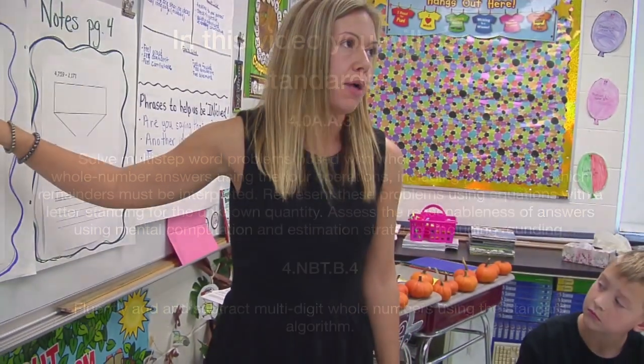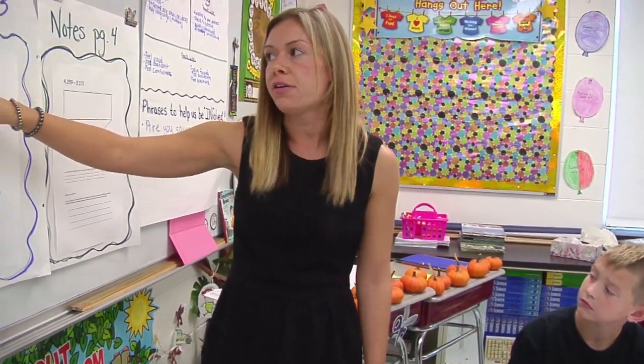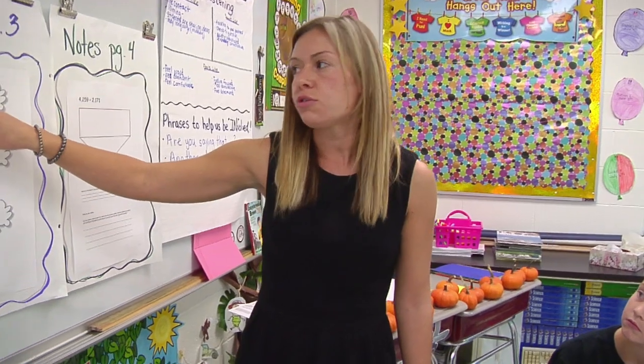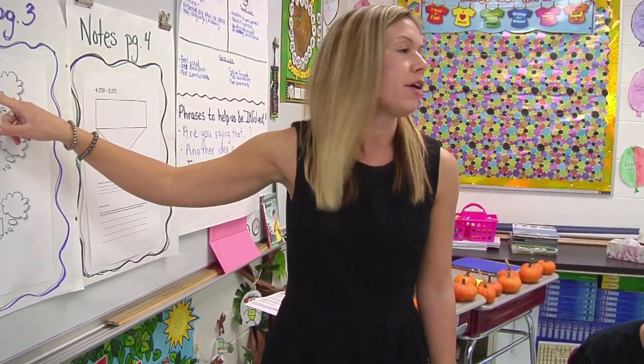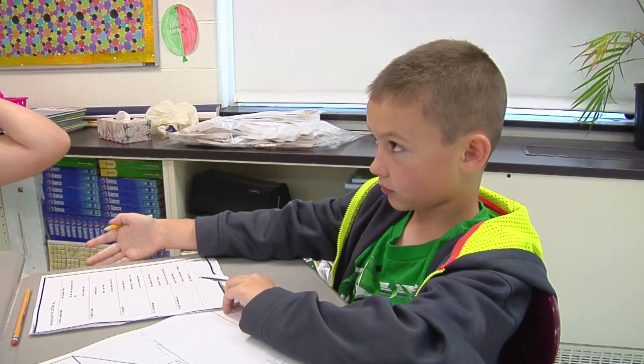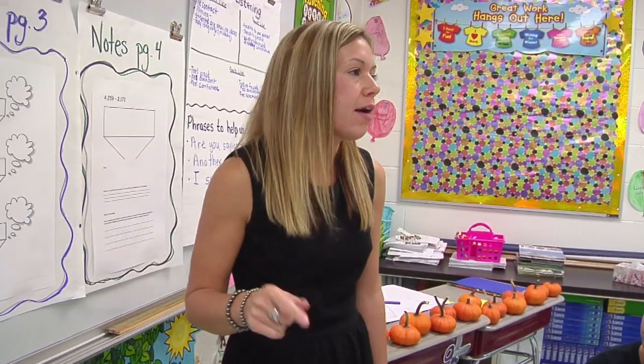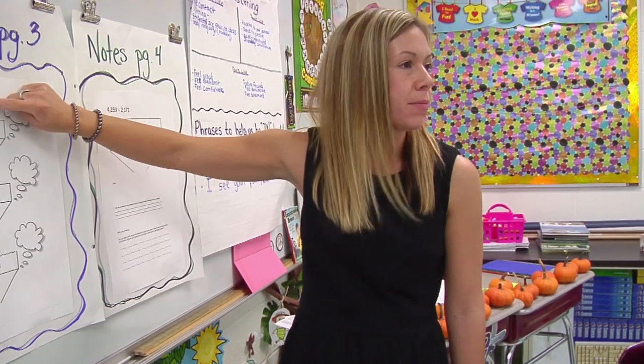So here's the subtraction problem: 4,259 minus 2,171. The purpose and objective of the lesson was for the kids to have a chance to explore subtraction. And what I want you to do is figure out what these tape diagrams are saying and which one is modeling this problem correctly.